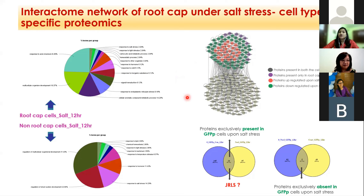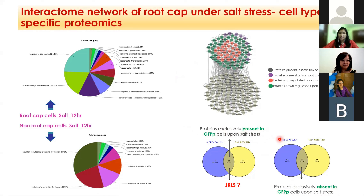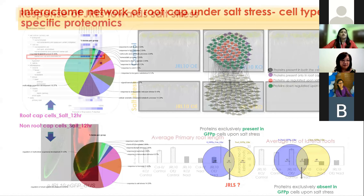A further detailed analysis looked into proteins exclusively present or absent in root cap cells upon salt stress. This is the best way to find new candidate genes which might have a role in regulating root salt stress responses. We identified many already-known genes with important roles in ion transport under salt stress, but there were also some unexpected new candidate genes — among them, mannose-binding jacalin-related lectins (JRLs).